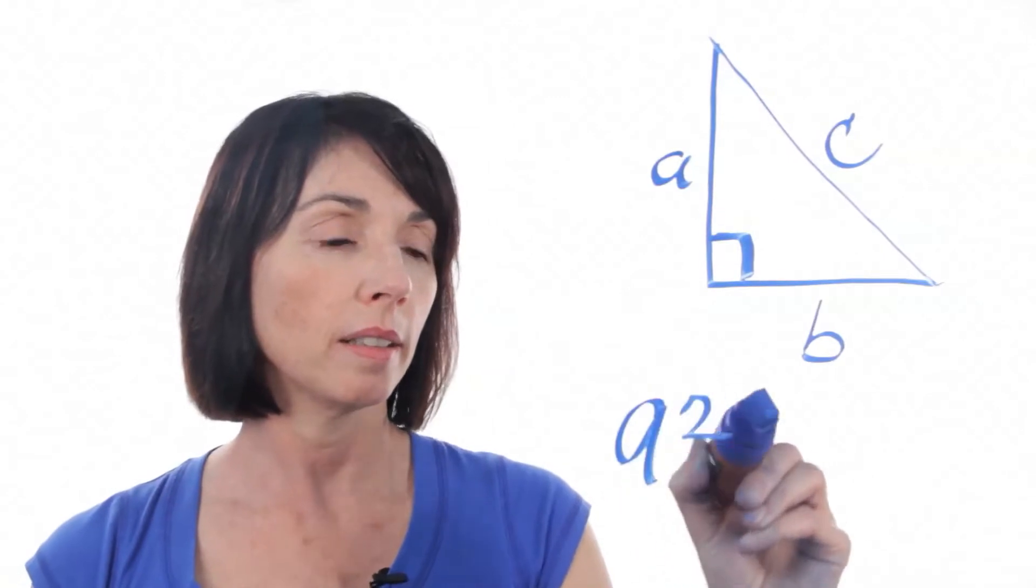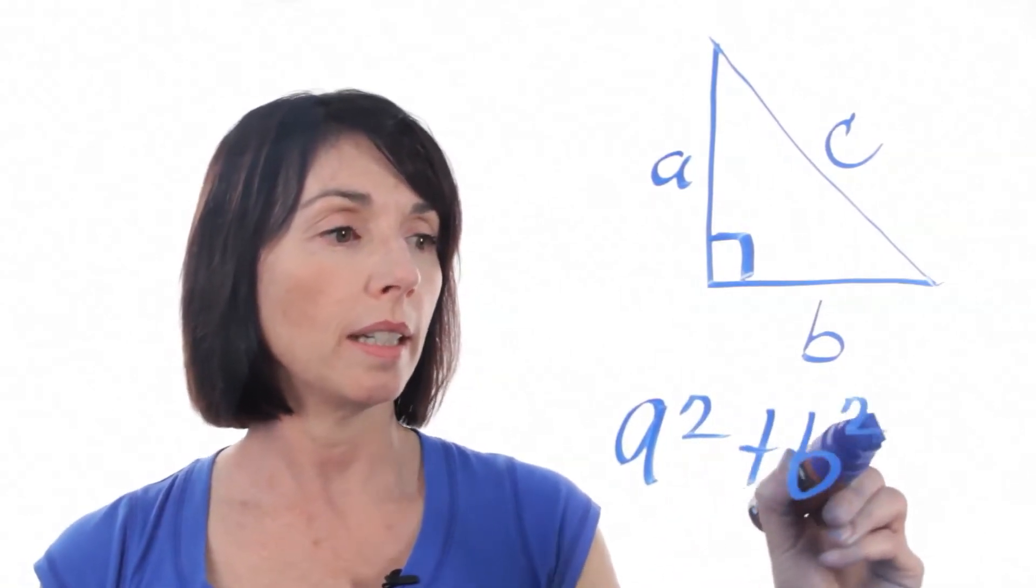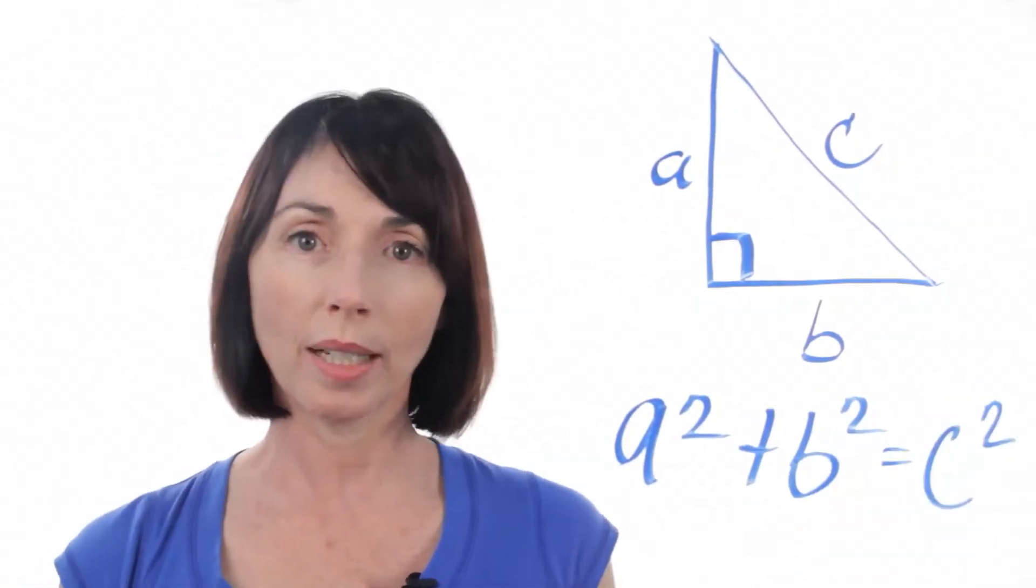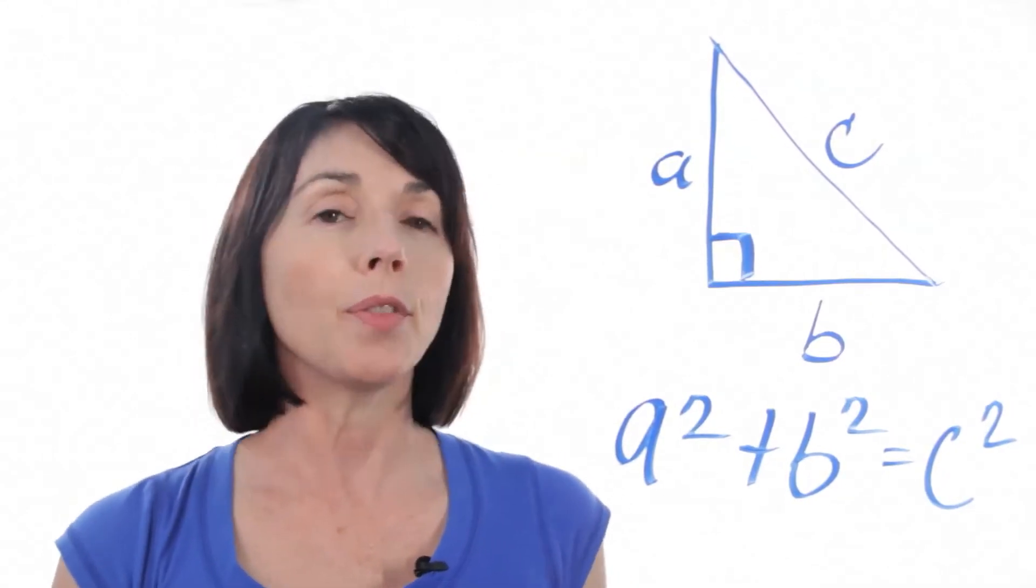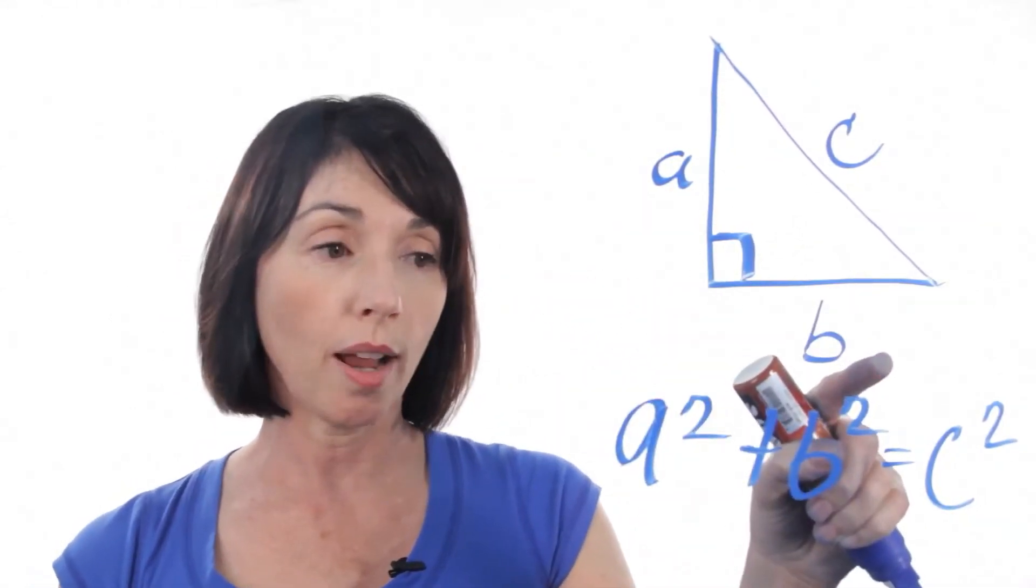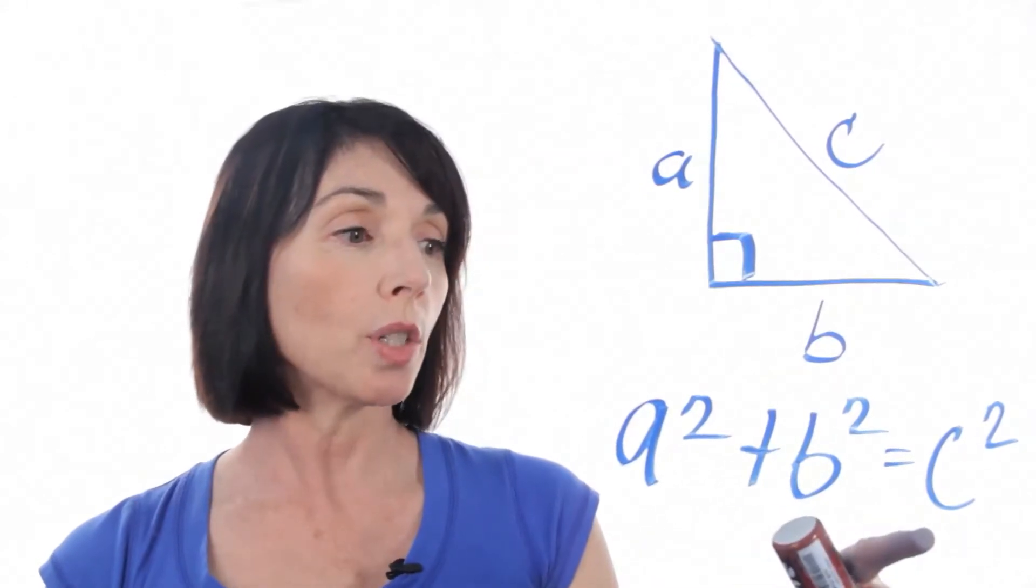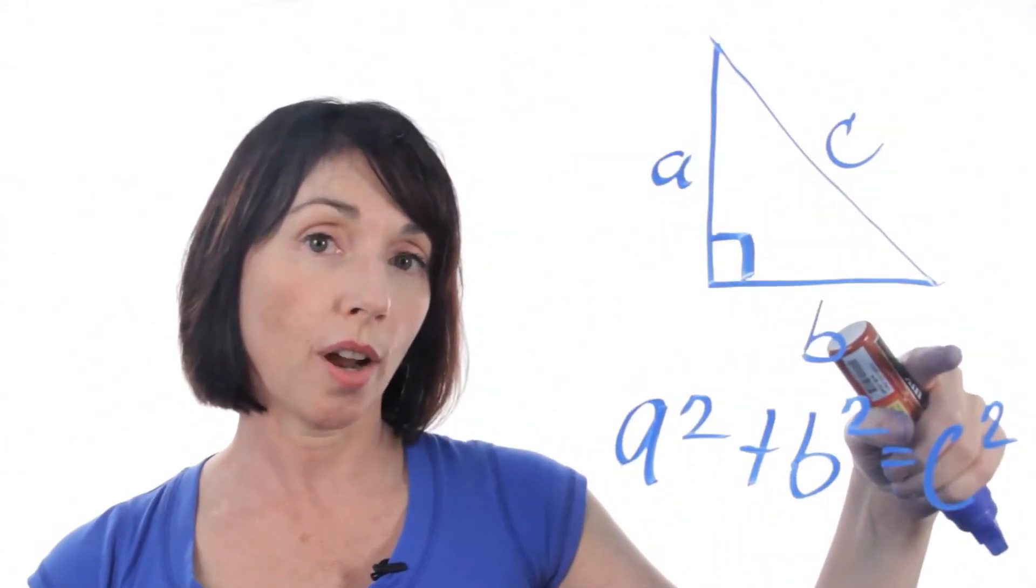A squared plus B squared is equal to C squared. So what does that mean? It means that if you square the length of each of the legs of the right triangle and add them up, you get the square of the longest side of the triangle.